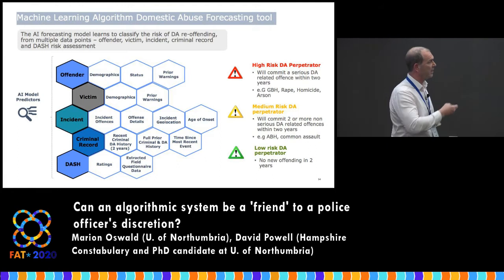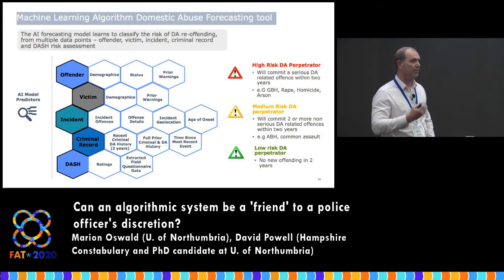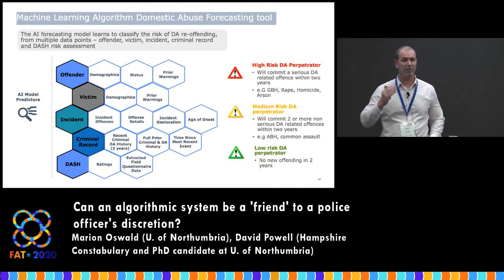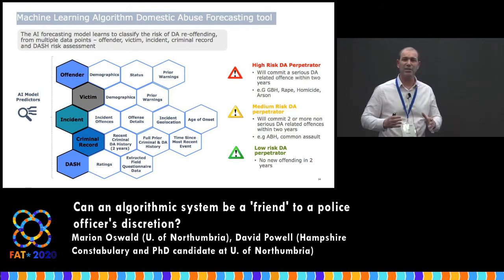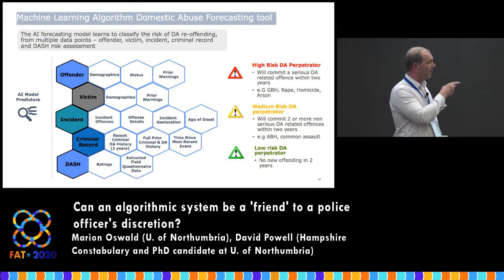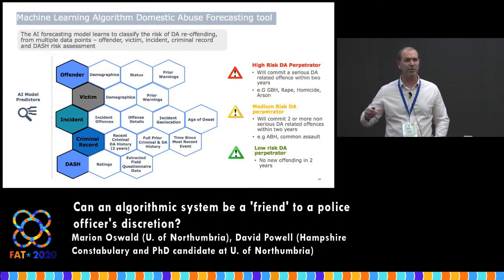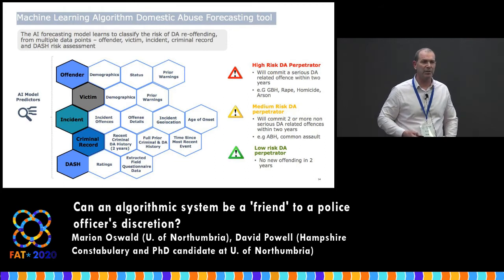What we're trying to risk assess is different from the existing tool. High risk means the perpetrator will commit a serious domestic abuse offence within the next two years — including arson, rape, homicide, grievous bodily harm. Medium means they will commit an offence within two years, but not at that serious level. And we're unequivocal about low risk: a low risk domestic abuse perpetrator will not offend again in the two years following the reported incident.